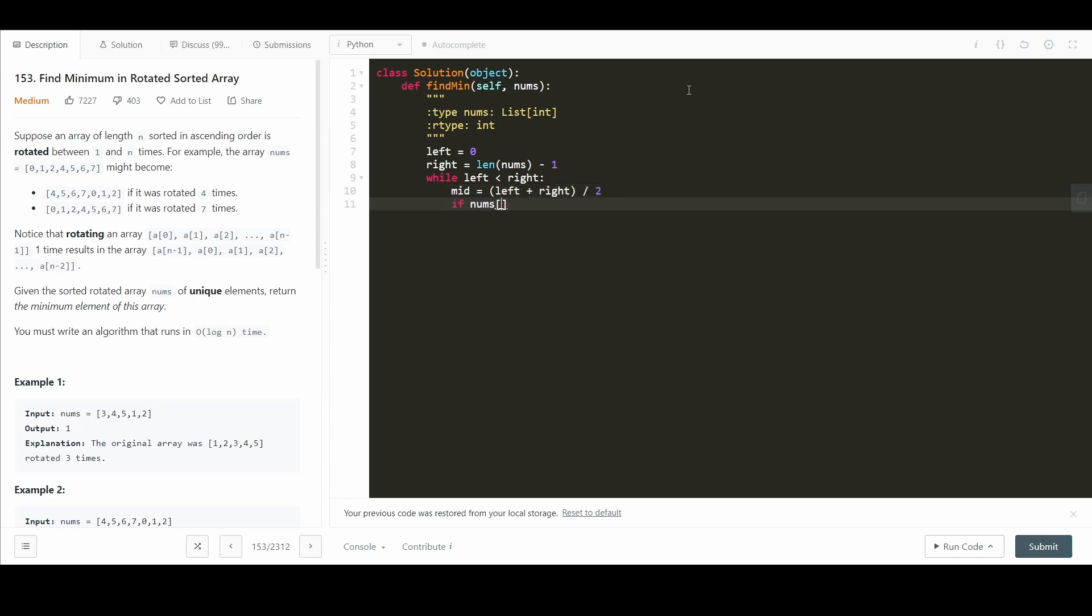We get the mid now mid equals left plus right divided by two. And now we check if nums at mid is greater than nums at right. And that's the main condition that we need to think about. And if that's true, then we just set left equal to mid plus one because we know the inflection point is going to be on the right side.